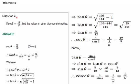Problem set 6, question number 4. These are 3-mark questions. Sec theta is 13 by 12 — it is given. Find the value of other trigonometric ratios. Since cos theta is 1 upon sec theta, cos theta equals 12 by 13. Using 1 plus tan square theta equals sec square theta, tan theta equals root of sec square theta minus 1. Substituting sec theta equals 13 by 12 squared: 169 upon 144 minus 1 gives 25 upon 144. So tan theta is 5 upon 12.